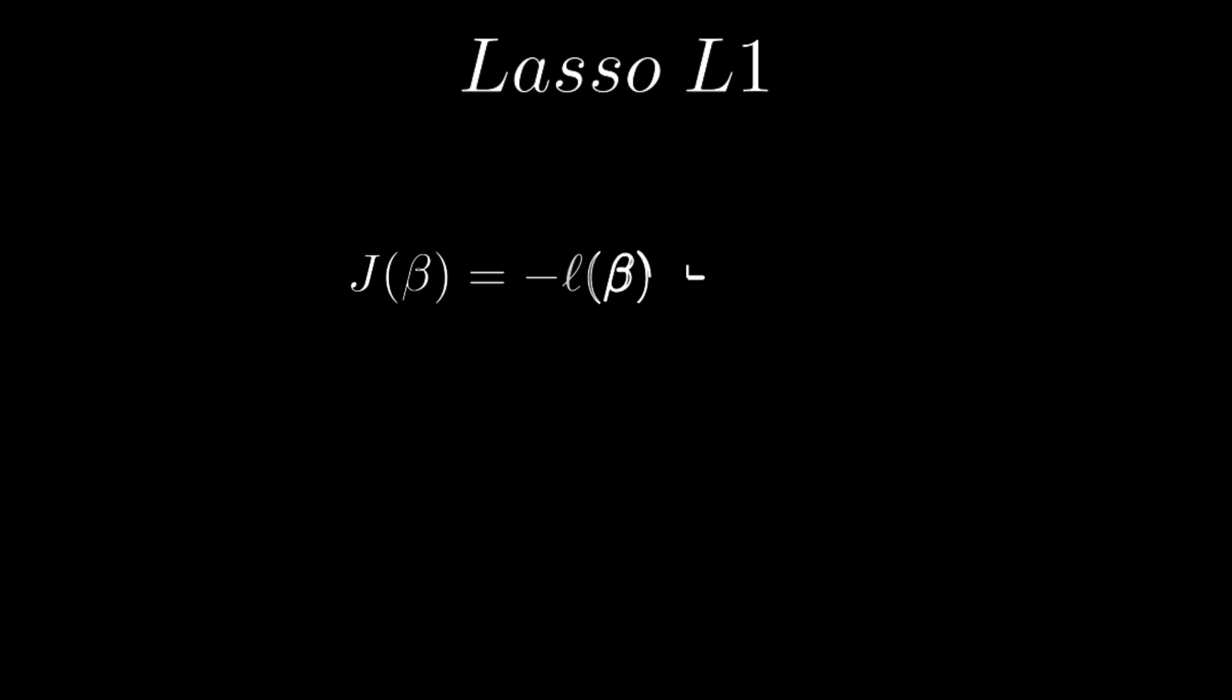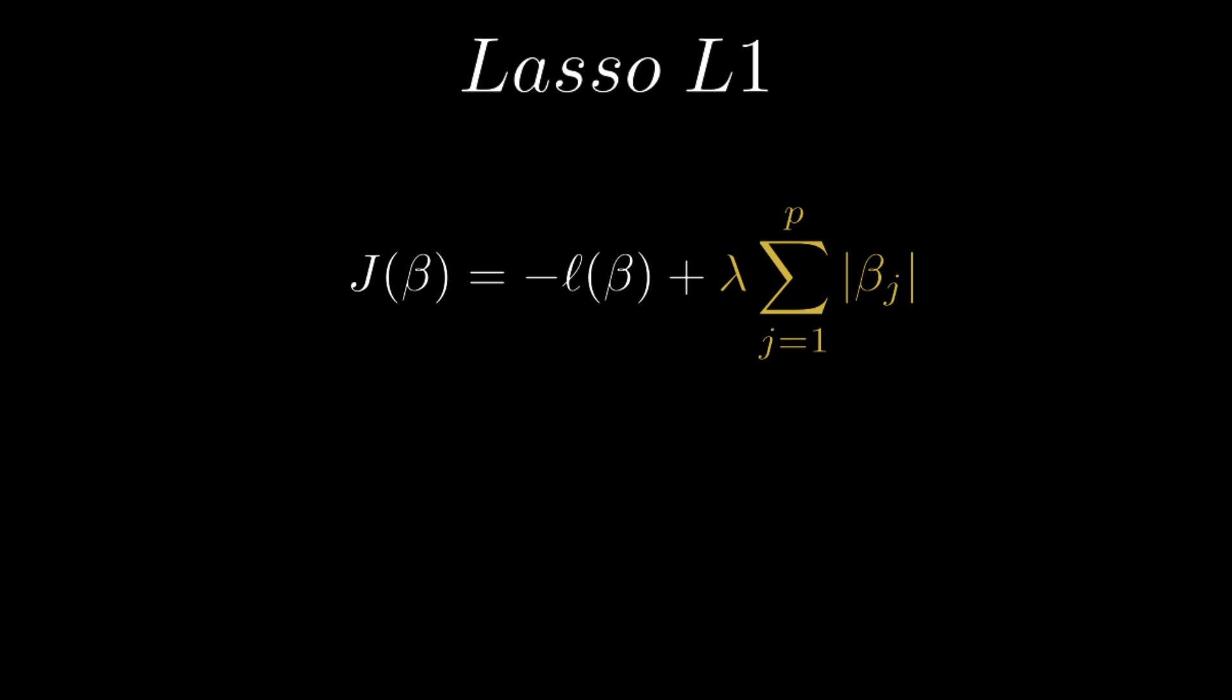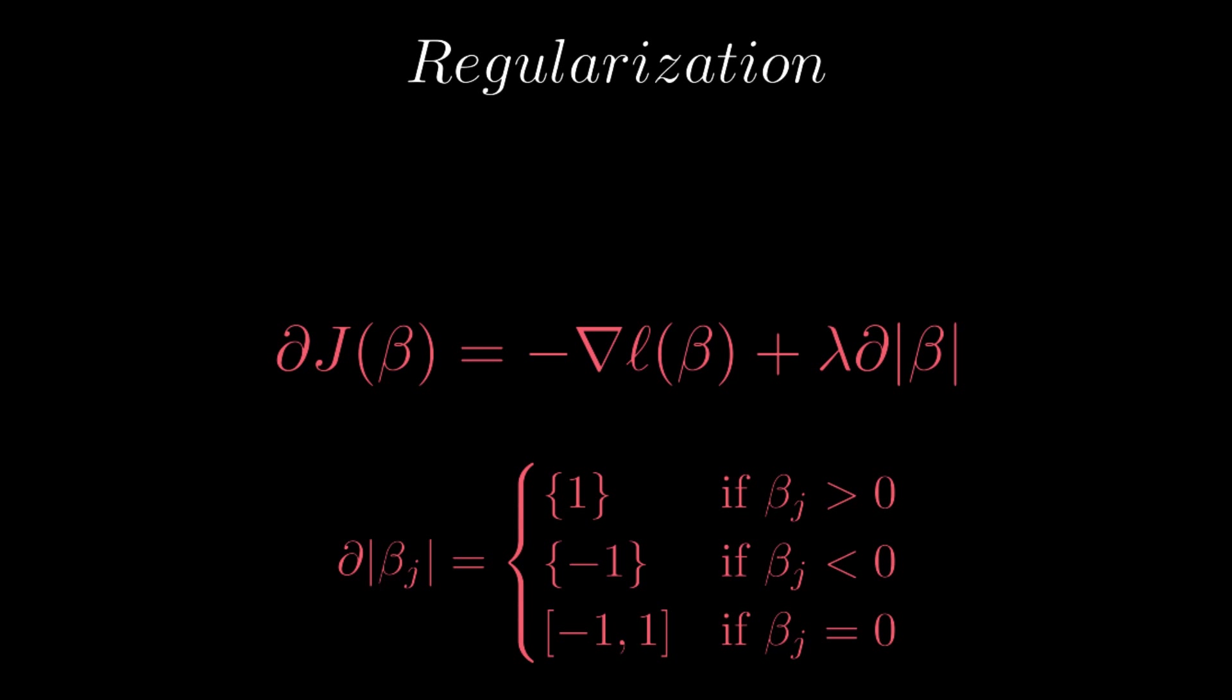The Lasso, also called the L1, uses the absolute values for the coefficients as the penalty. Unlike Ridge, Lasso can shrink some coefficients to exactly zero, which results in a simpler and easy-to-interpret model, and we call it sparsity. The gradient of the Ridge cost function is given simply by the gradient of the penalty term plus the gradient of the cost function. And for Lasso, the absolute value isn't differentiable at zero, so we use the subgradient or proximal thresholding for more advanced implementation.